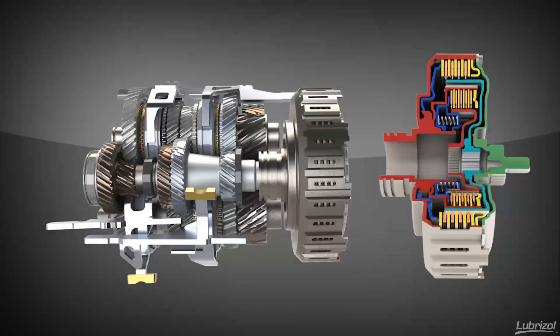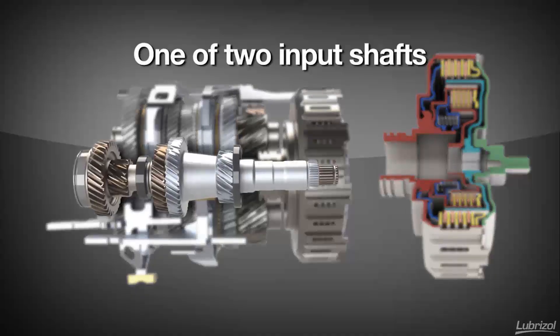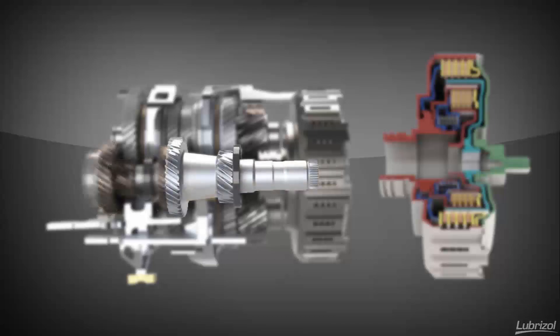Although a traditional manual transmission uses a singular input shaft, the gears in a dual clutch transmission are driven by one of two input shafts. Typically the odd-numbered gears are driven by one shaft and even by the other.